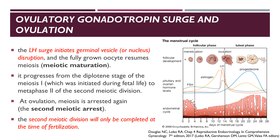The LH surge initiates the eventual rupture of the dominant follicle to release the oocyte, which then resumes meiosis, or what we call meiotic maturation. The oocyte was once arrested at the diplotene stage of meiosis 1; now with the rupture of the dominant follicle, the oocyte has entered metaphase 2 of meiosis 2. During ovulation, meiosis is again arrested — the second meiotic arrest — and this will only resume at the time of fertilization.